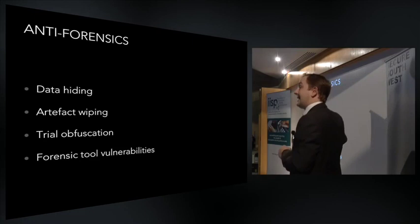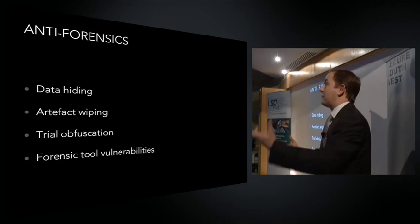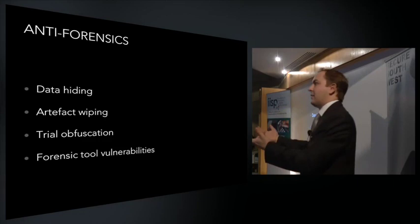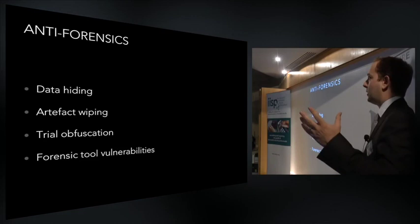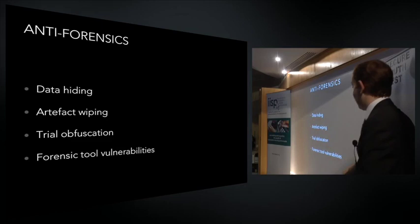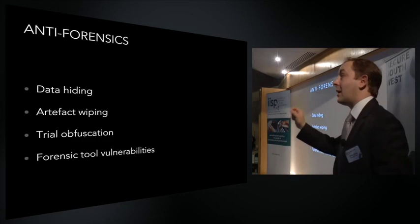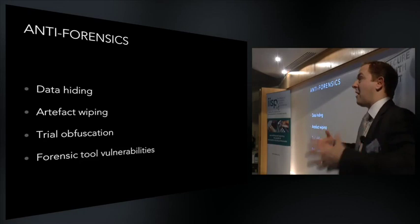Trace obfuscation is about misleading the system admin in terms of what you're doing on the system. I talked about file signature analysis earlier — there's an app called Transmogrify that will modify the header information as well, so as far as forensic software is concerned, it is indeed a document or a temporary file, not an image. The person who owns the system knows it's an image and can simply right-click and open it in a viewer. There are also tools that modify the MAC times — timestamps of particular files being opened and closed — making it very difficult for an investigator to understand the actual sequence of events.